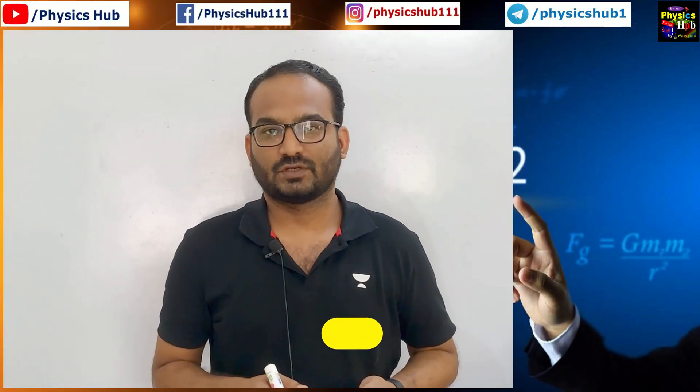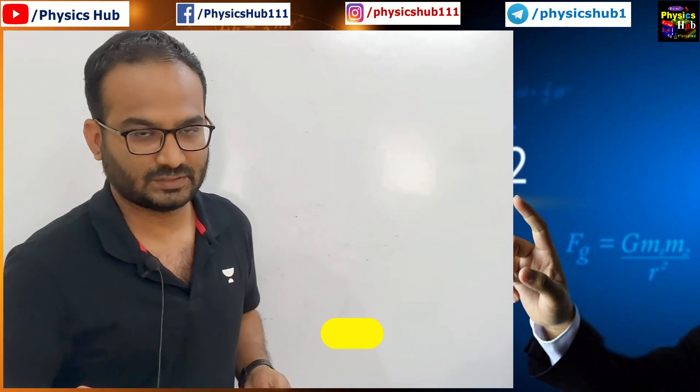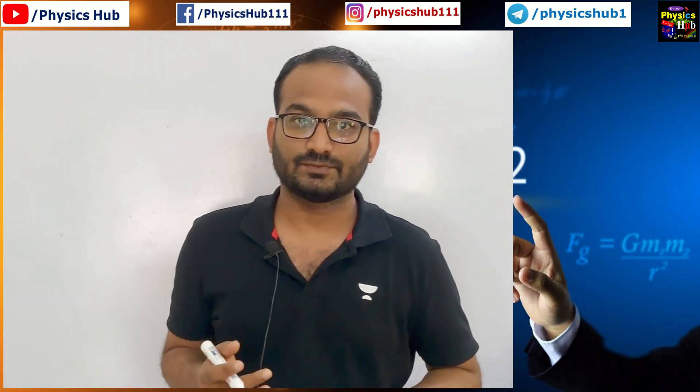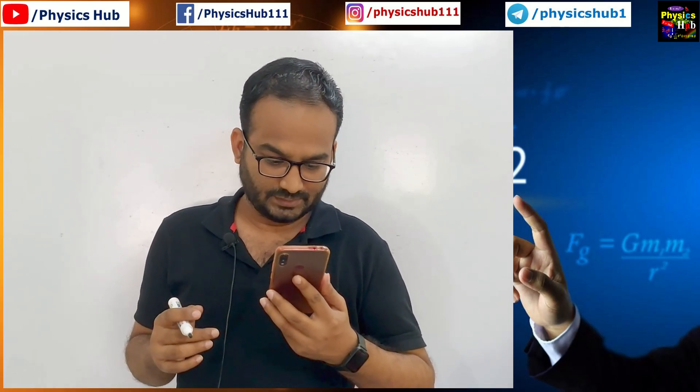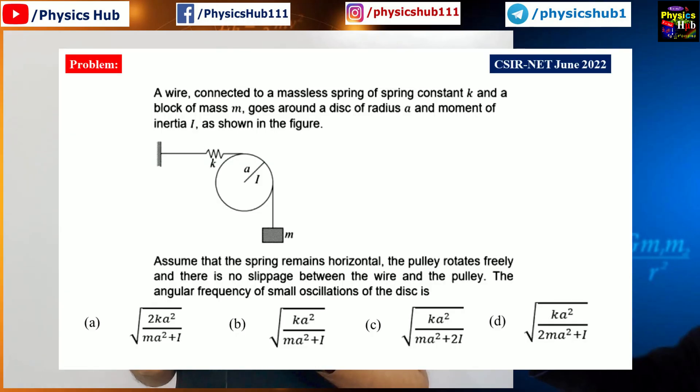Okay guys, so today in this video we are going to solve a problem from CSIR NET June 2020 examination. This is from Classical Mechanics. Let me read the question for you. The question reads like this: a wire connected to a massless spring of spring constant K and a block of mass M goes around a disk of radius A and moment of inertia I as shown in the figure.